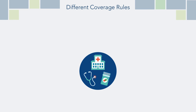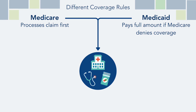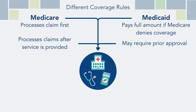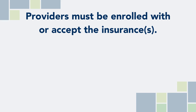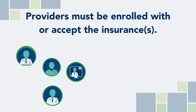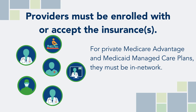When the coverage rules are different for certain services, Medicare will process the claim first, but if it is denied, Medicaid should pay the full amount. Medicare rules generally do not allow for a claim to be processed until after the service is provided, but many Medicaid programs require approval before getting the service. Additional authorization may be required by a Medicare Advantage plan or Medicaid-managed care plan. Additionally, for Medicare or Medicaid to cover a service, the provider must be enrolled with or accept the insurance. If the patient is in a Medicare Advantage plan or a Medicaid-managed care plan, the provider must also be part of that private plan's network.